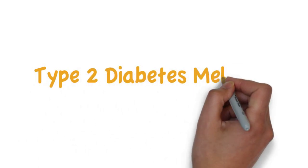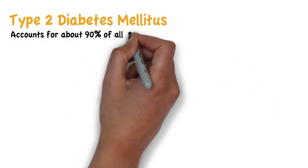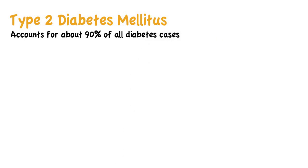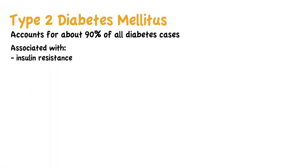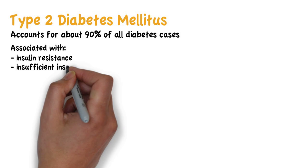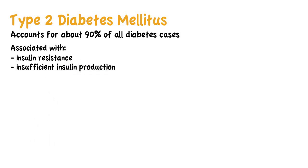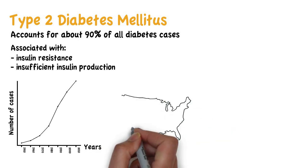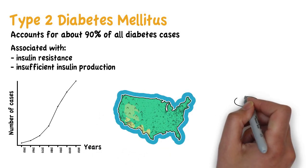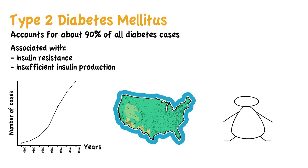Type 2 diabetes mellitus accounts for about 90% of all diabetes cases around the world. It is a condition that is mostly associated with insulin resistance, but it is also often due to insufficient insulin production. The number of cases of type 2 diabetes has been increasing throughout the years, together with the adoption of a Western lifestyle and the increase in obesity.